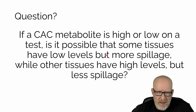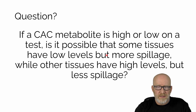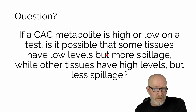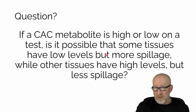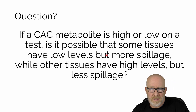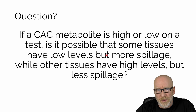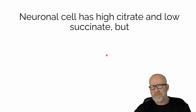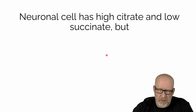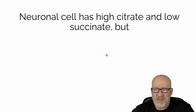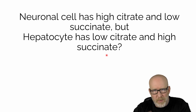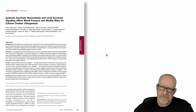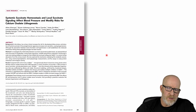And we're not done. If a citric acid cycle metabolite is high or low on a test, is it possible that some tissues have low levels of citrate and are massively spilling because they're damaged, while other tissues have high levels but are not being damaged? What's the net result of that in the urine after that long journey? For example, say neuronal cells have high citrate and low succinate, but liver cells have low citrate and high succinate. What are we really measuring? We'd say, well, you have low succinate — you're probably deficient in some B vitamins or maybe magnesium. But let's look at the literature.